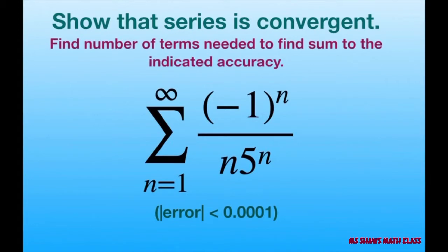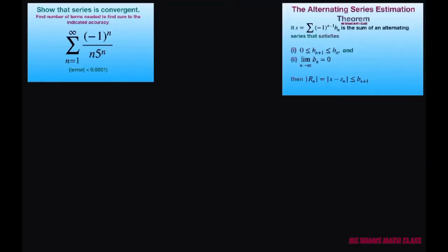And this is our error here. So let's look at this. I'm going to rewrite it so we can get started. We're going to write the sum from n equals 1 to infinity: negative 1 to the nth power times 1 divided by n times 5 to the nth power.